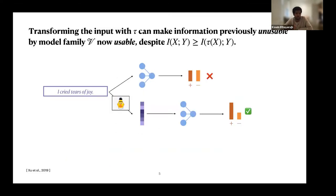To understand how this works at a high level, consider predicting the sentiment of a sentence. If I fed raw text into a linear model, it probably wouldn't do too well because linear models typically don't operate well on raw text. But if I took this text and transformed it into a BERT embedding, then suddenly this task becomes feasible for a linear model. This is despite the fact that, according to the data processing inequality, the amount of Shannon information between the transformed input and the sentiment label can be no greater than that of the original input and the label. Intuitively, transforming the input can make information that was previously unusable by model family V now usable.